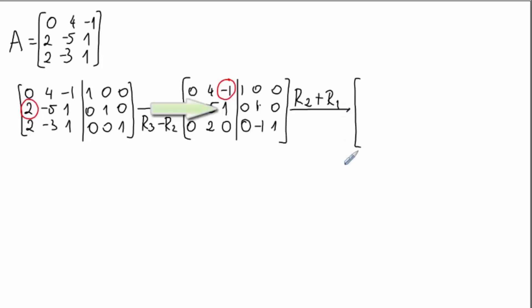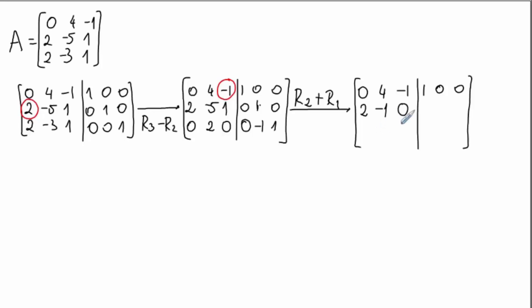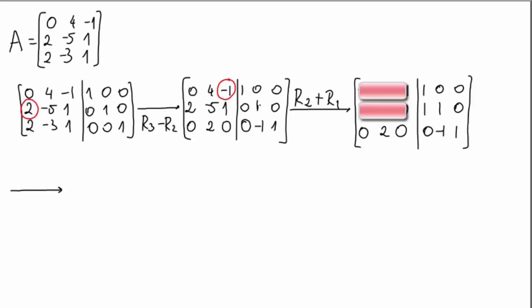The operation R2 plus R1 will zero out the one element remaining in this pivot column. The first row stays unchanged, the second row changes by addition, and the third row stays unchanged. Next, we cover the first and second rows where our pivots already sit. The only remaining option is the 2 in the third row. You can either convert it to a 1 first or use it directly to zero out the column — either approach works.